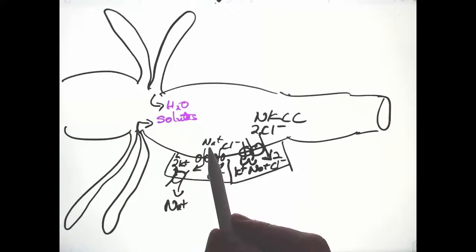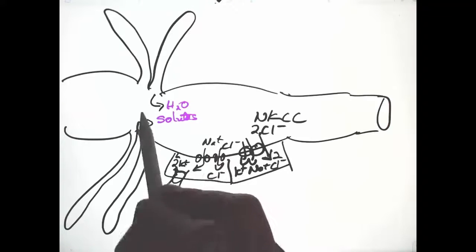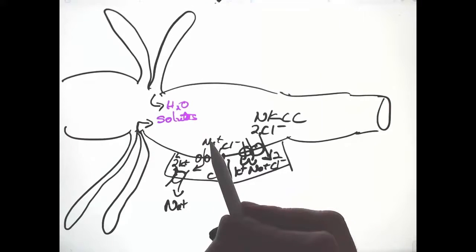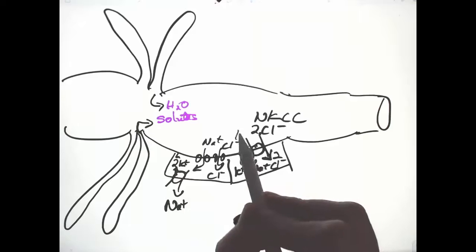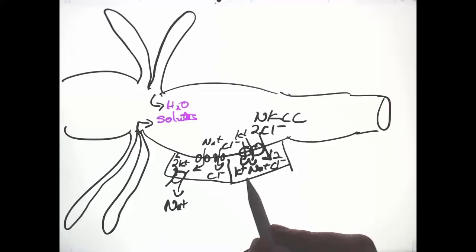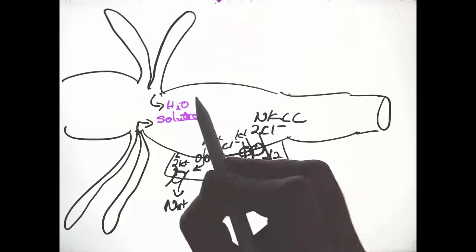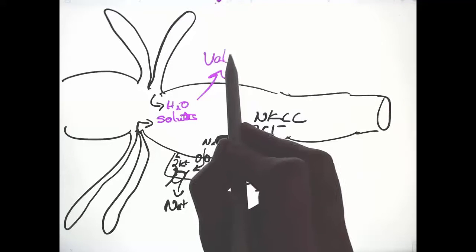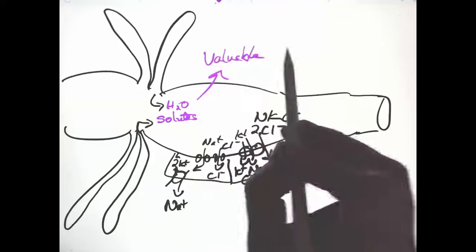So regardless of whether sodium is the primary cation that's used to move solutes into the Malpighian tubules, or whether it's potassium, either sodium or potassium can be moved by the sodium-potassium pump. Valuable solutes are recovered in the same way with the same transporters as in other animals.